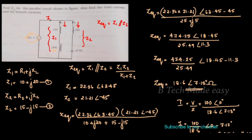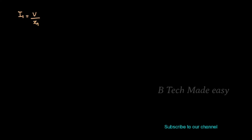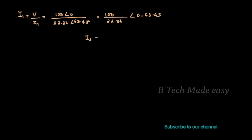Now we find the branch currents. Since both branches have the same parallel voltage, I1 equals V divided by Z1. That is 100 angle 0 degrees divided by 22.36 angle 63.43 degrees, which equals 4.472 angle minus 63.43 degrees.